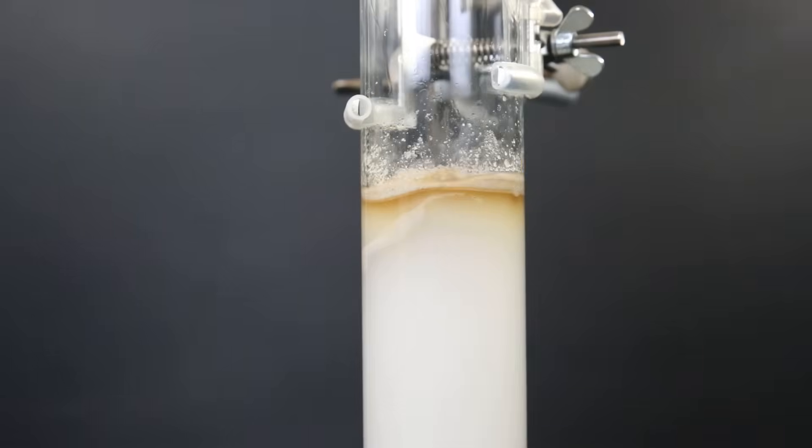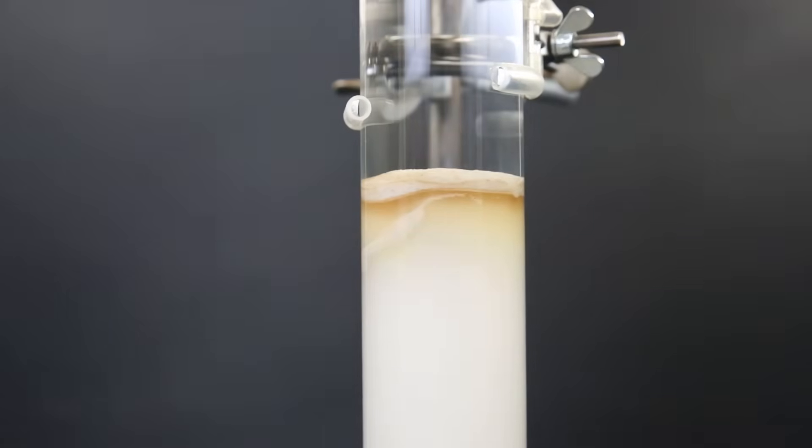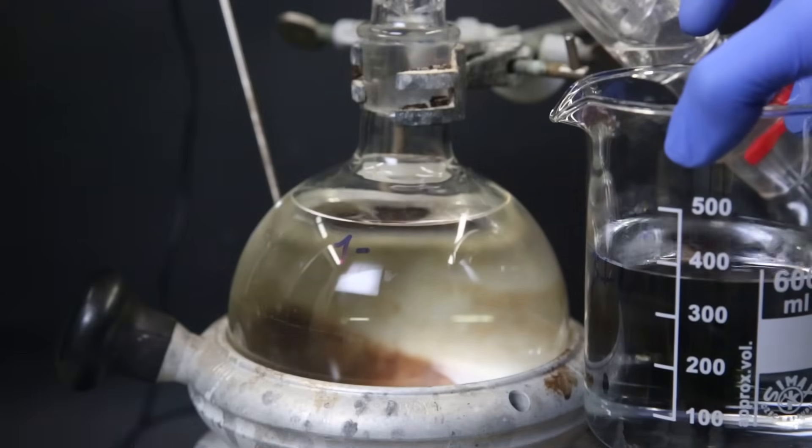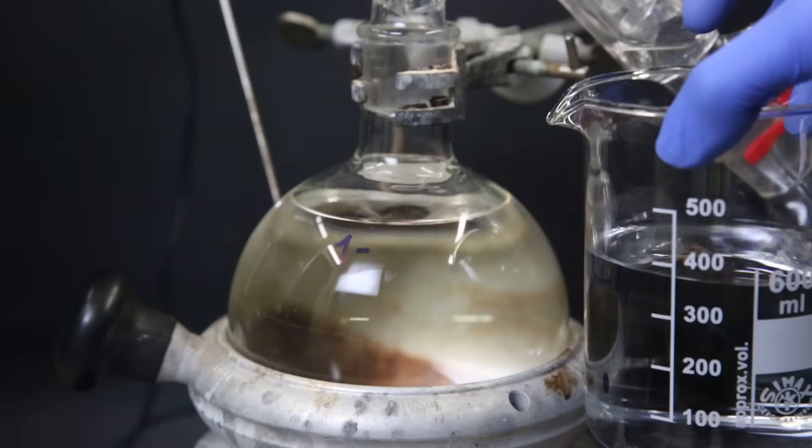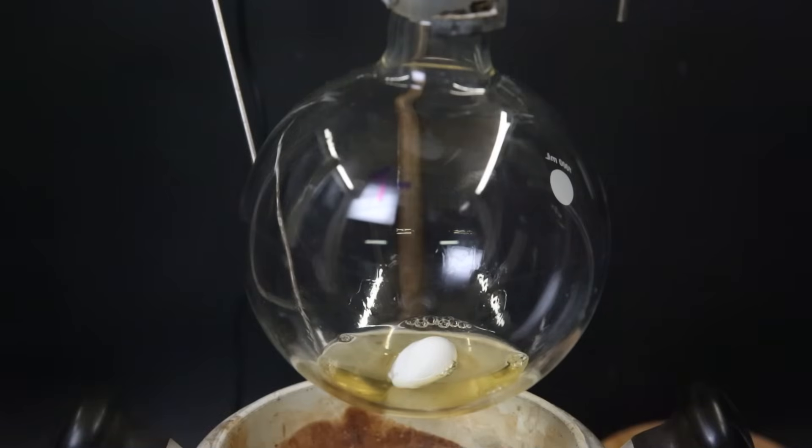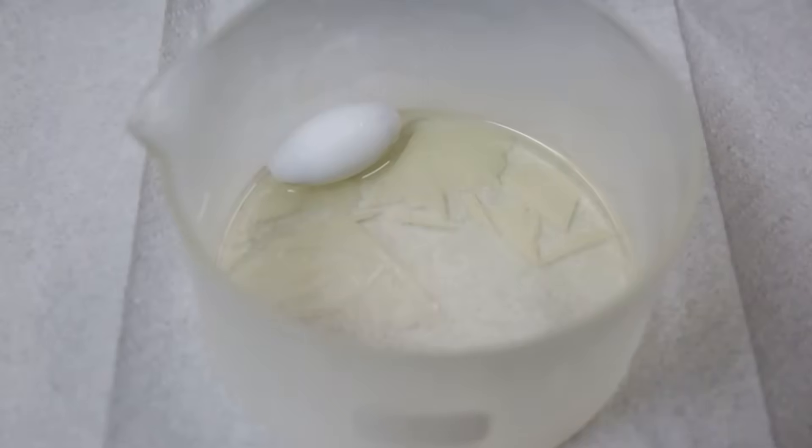I then add more of the eluent on top and start running the column. I collect many large fractions and after some hours all of it has come through. I combined all of the fractions containing the bipyridine, which is about 1.4 L of solvent, and then distilled it all over. When all of the solvent is gone, I am left with a clear yellow liquid. I put it all into a crystallizing dish and then set it in the freezer to crystallize out all the bipyridine.